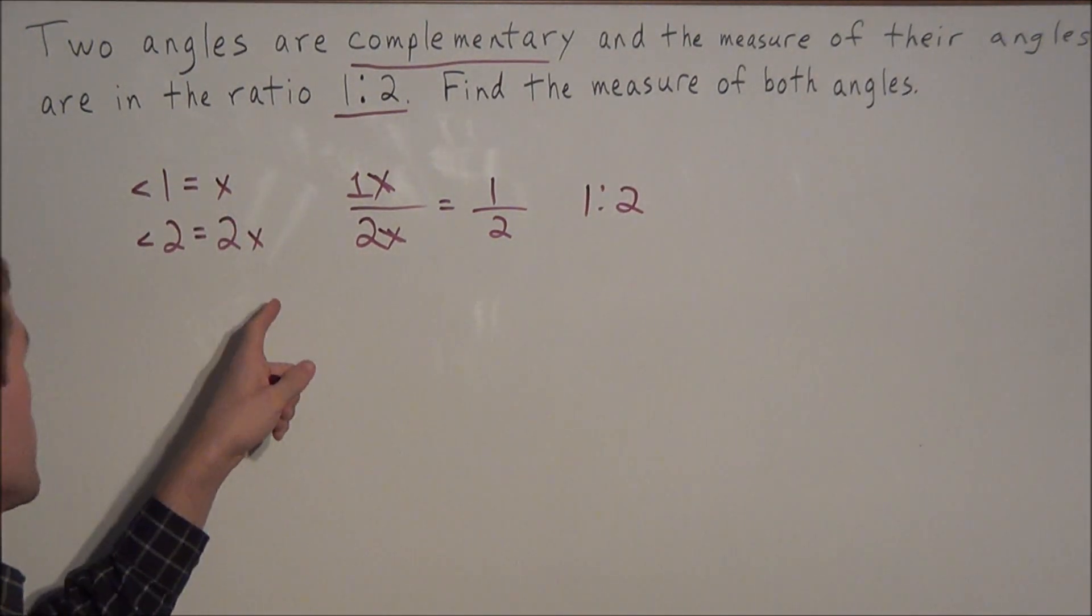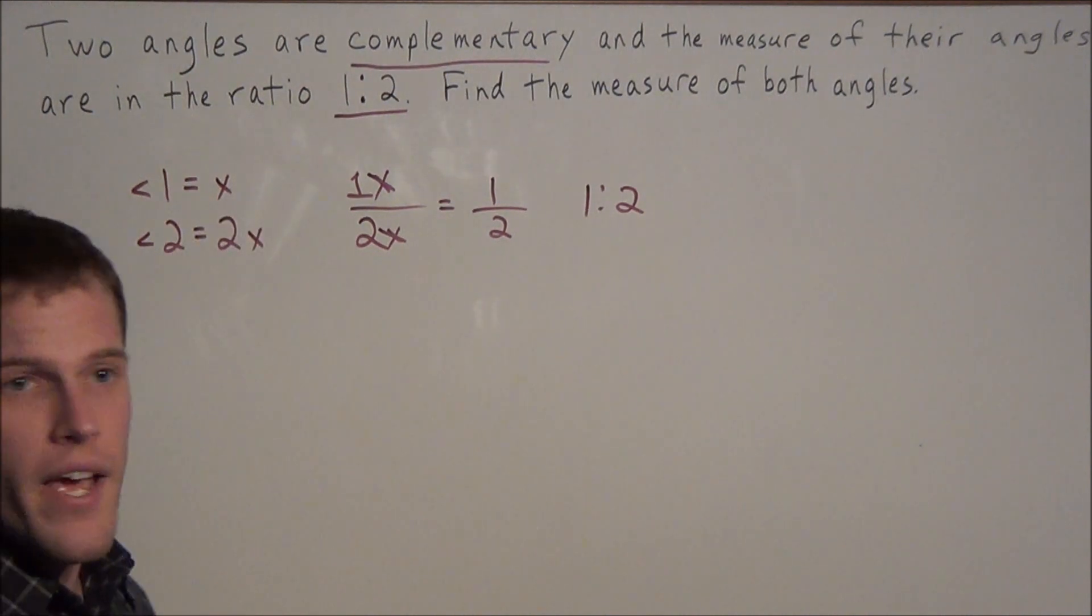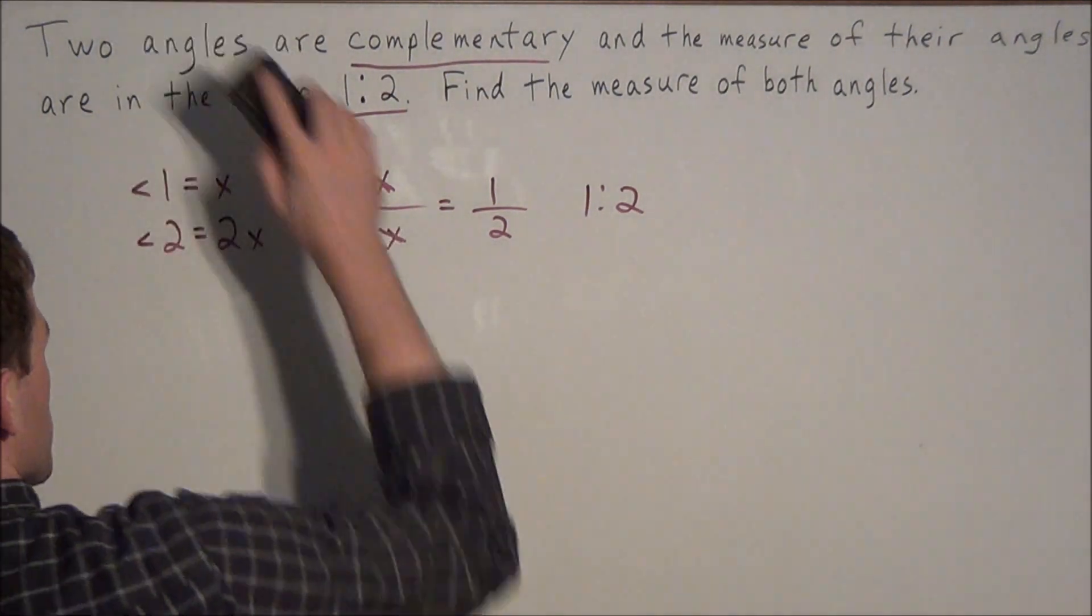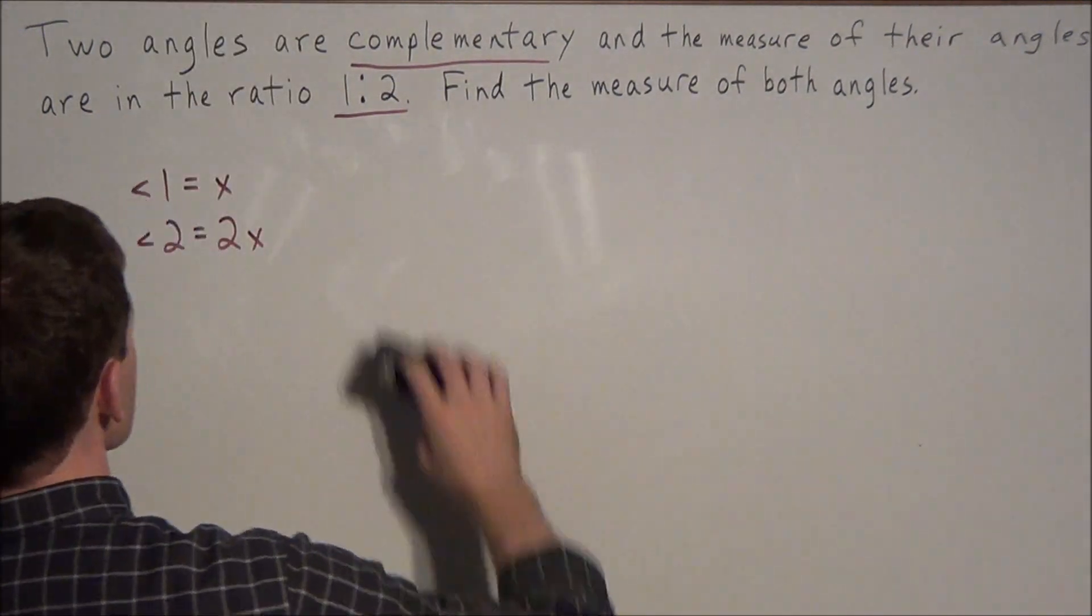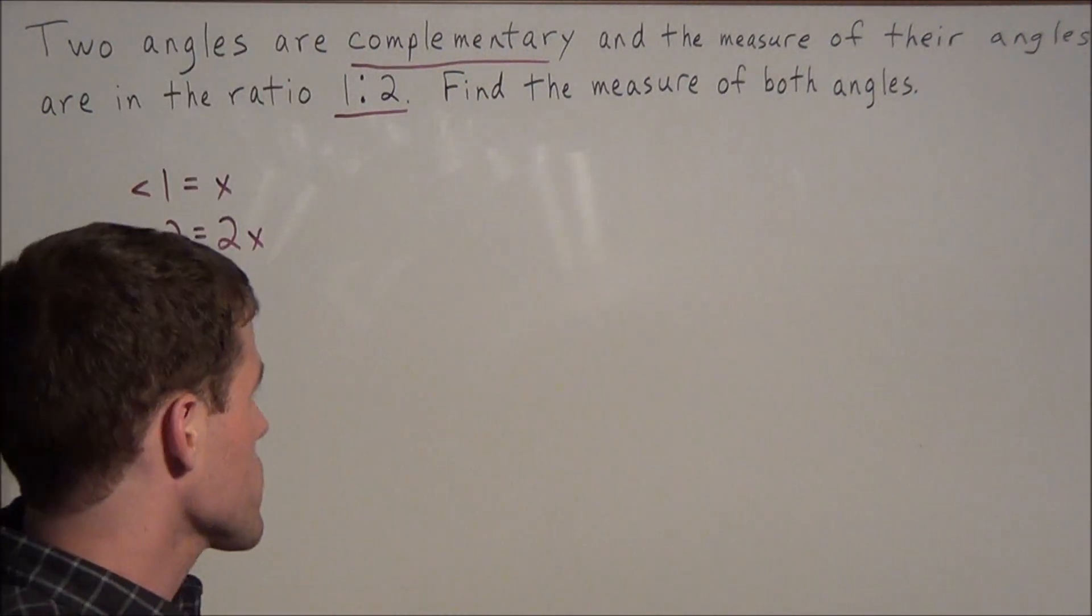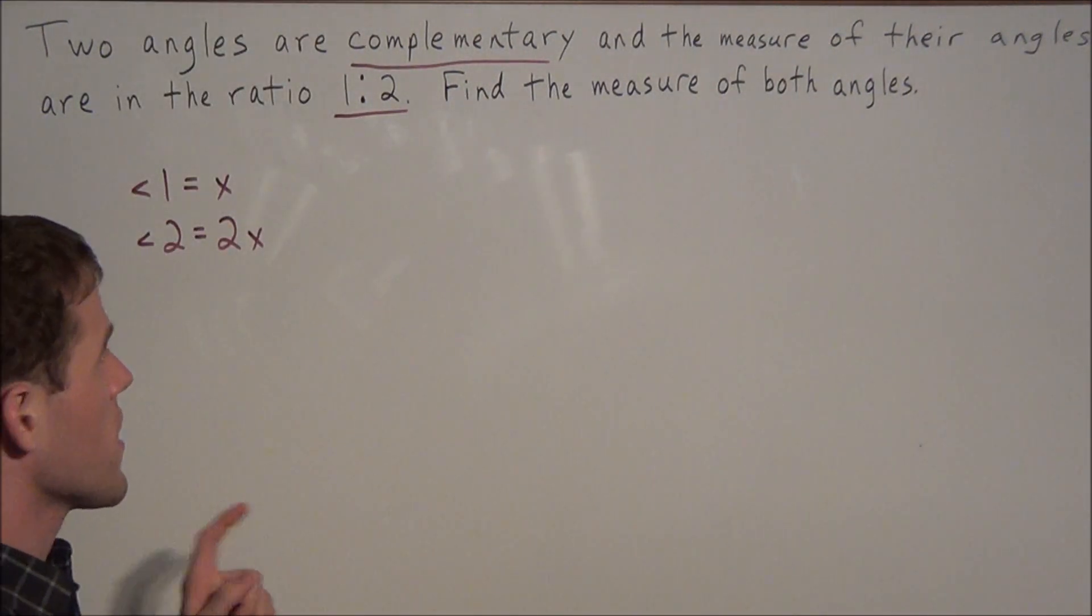So this is how we know we could set the first angle to be x and the second angle to be 2x. But now we need to think, what does it mean for two angles to be complementary? Two angles are complementary if they sum to 90 degrees.